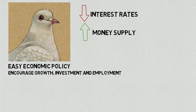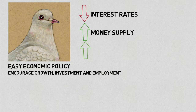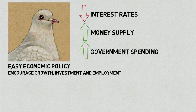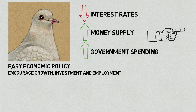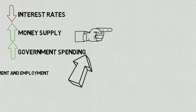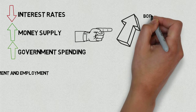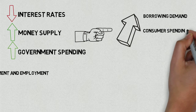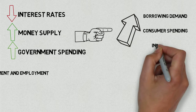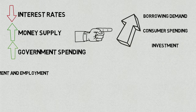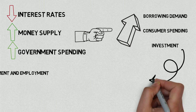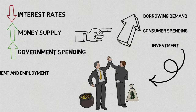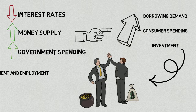Lowering interest rates, increasing the money supply, or increasing government spending on things like infrastructure and industry tends to allow money to move freely within the economy and builds up demand for borrowing and consumption. This not only spurs consumer spending but also boosts investment. As a result, more jobs are added, individuals and companies generate greater income, and everyone is happy.